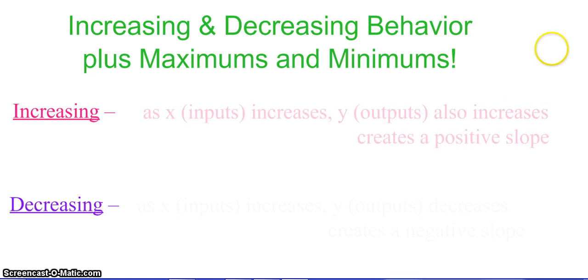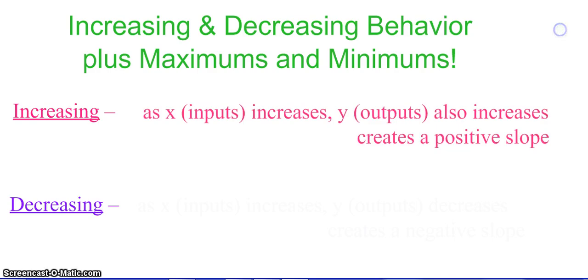First, an increasing function: as your x values get bigger, your y values also get bigger, creating a positive slope. So your graph is going up, essentially, as you read from left to right.